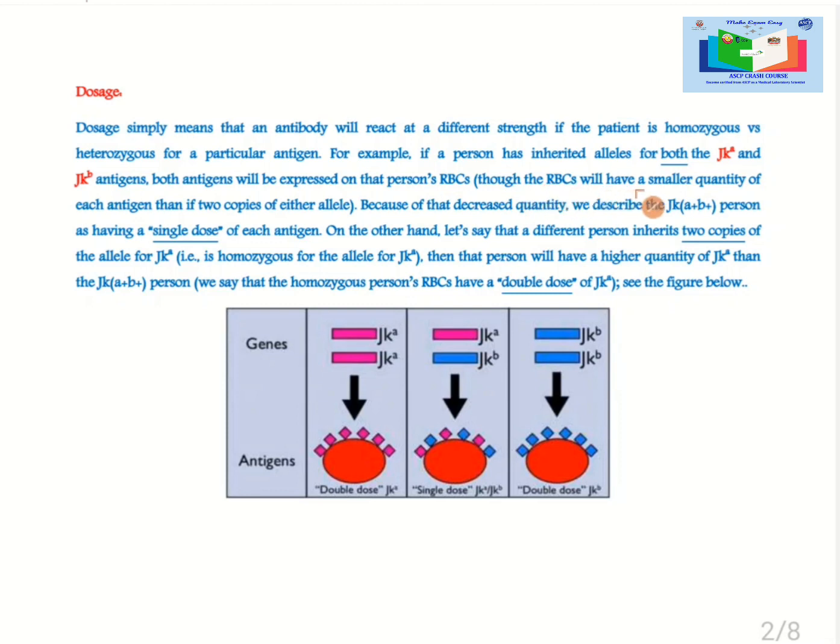Though the RBCs will have a smaller quantity of each antigen than if two copies of either allele. Because of that decreased quantity, we describe the JKA plus B plus person as having a single dose of each antigen.